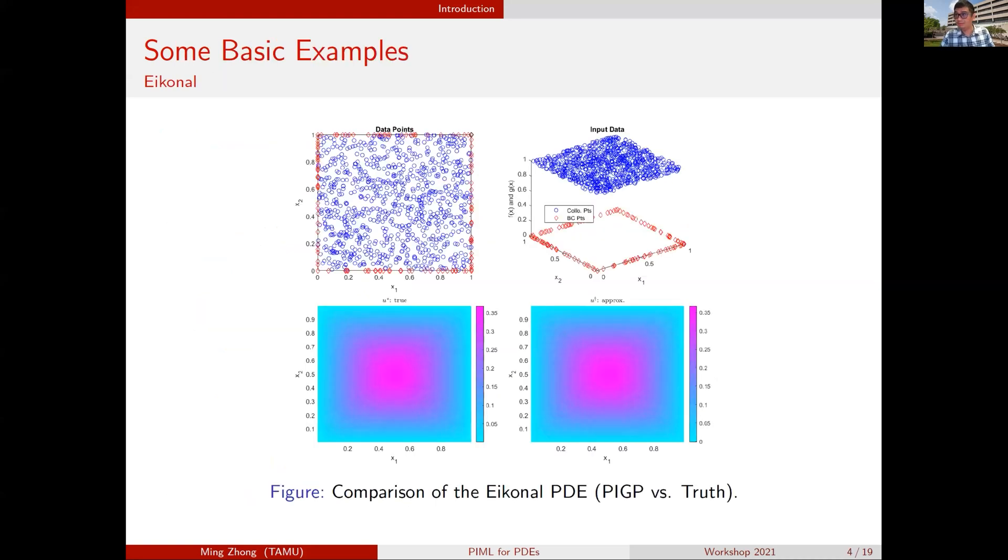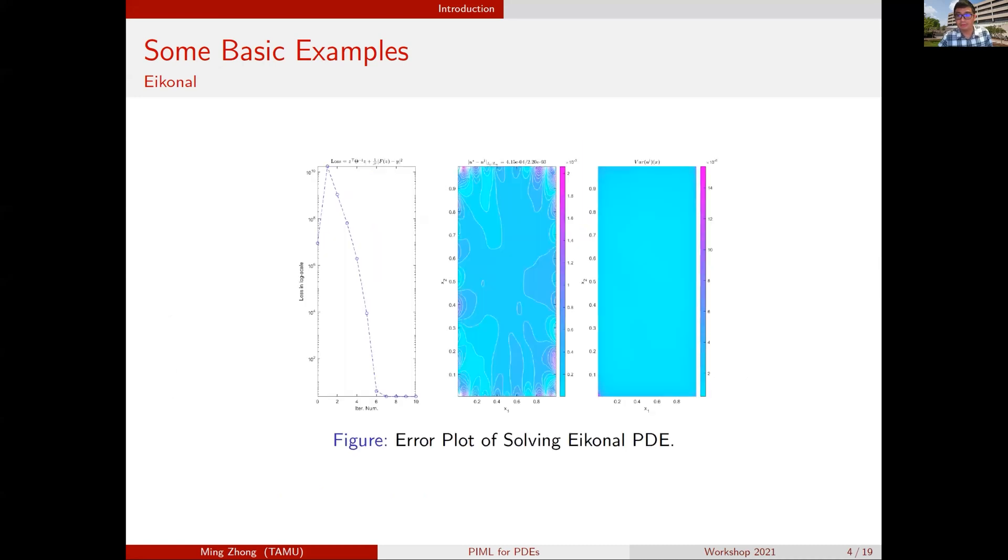Now we have two successful candidates using machine learning to solve or even learn PDEs. The first one is using Gaussian process, the second one using a deep neural network. Let me give you some basic examples of using Gaussian process to solve PDEs. This is an example using Gaussian process to solve the Darcy PDE used in image processing. Using Gaussian process, you can actually solve it with pretty good high accuracy.